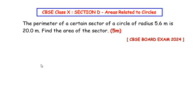Hello and welcome to my channel. In this video we are going to solve a Section D question from Areas Related to Circles chapter which appeared in CBSE Board Exam 2024. This question is for five marks. The perimeter of a certain sector of a circle of radius 5.6 meters is 20 meters.